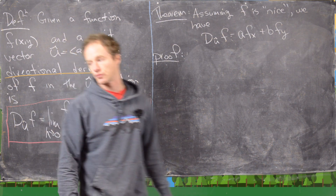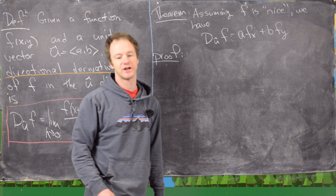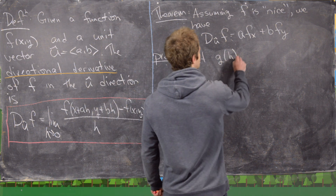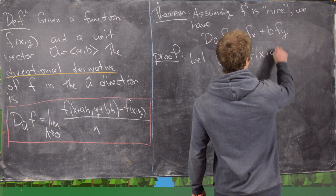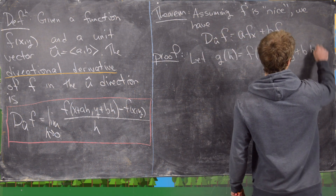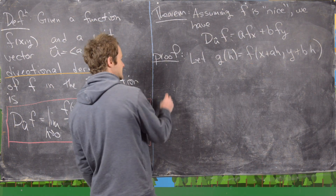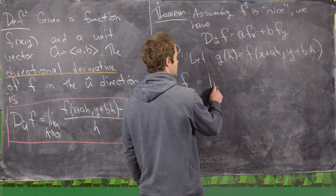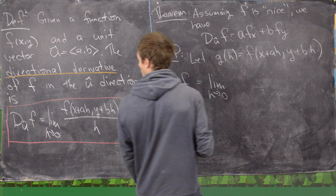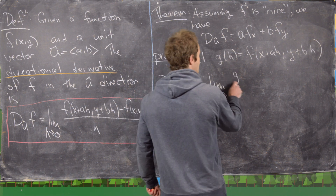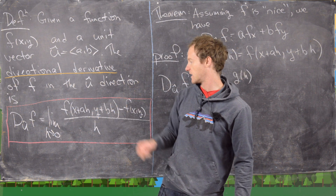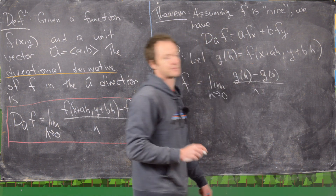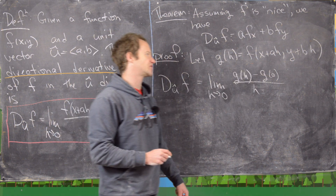Our strategy for the proof is to rewrite this limit as a one-variable function and then use single-variable calculus. Let g of h equal f of x plus ah, y plus bh. Then the directional derivative in the direction of u is the limit as h goes to zero of g(h) minus g(0) over h, since g(0) is just f of xy.